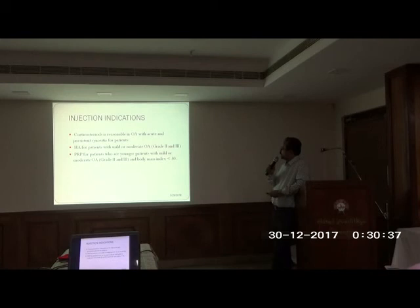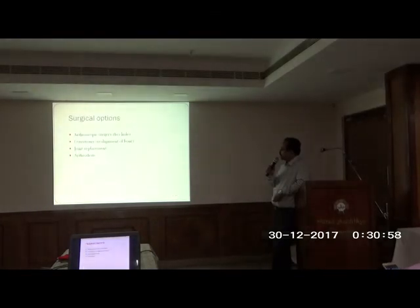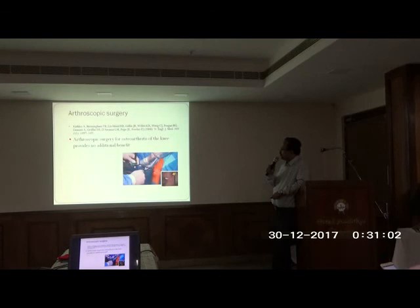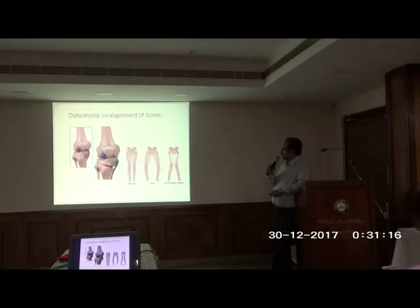Regarding injection indications: corticosteroid is given in acute situations when the patient is having synovitis. HA injections are preferable in mild to moderate OA — grade 2 and grade 3, but not grade 4. PRP injections are useful in younger patients with mild or moderate osteoarthritis. After severe osteoarthritis, treatment is mainly surgical. One option is arthroscopic surgery, but after a landmark paper in 2008 it was shown that arthroscopic surgery is of no benefit in osteoarthritis.